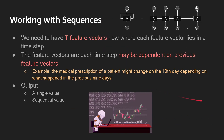Now let's talk about working with sequences or sequential data. We need to have T feature vectors instead of a single feature vector, where each feature vector lies in a time step. The feature vectors at each time step may be dependent on previous feature vectors. This is why we use recurrent neural networks — we need to capture the relationship between all the previous time steps. For example, the medical prescription of a patient might change on the 10th day, and that is entirely dependent on what happened in the previous nine days. So that is an example of where we might apply RNNs.